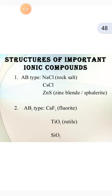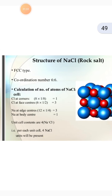The first is the structure of NaCl. It is an FCC type. The coordination number is 6 to 6. For the calculation of the number of atoms in the NaCl unit cell: the chlorine at corners — 8 × (1/8) = 1. The Cl at face centers: 6 × (1/2) = 3.